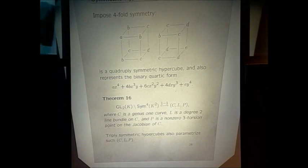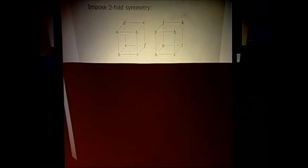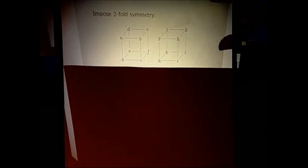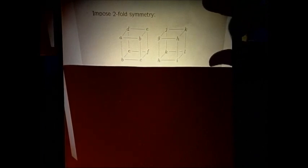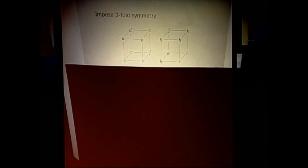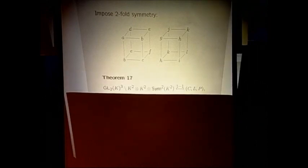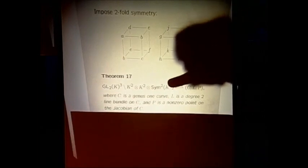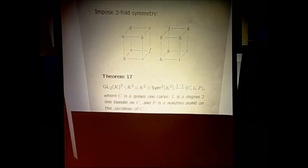One can also impose two-fold symmetry. If one imposes just two-fold symmetry — replacing K² ⊗ K² ⊗ K² ⊗ K² with K² ⊗ K² ⊗ Sym²K², i.e., two-by-two matrices of binary quadratic forms — then doubly symmetric hypercubes modulo the action of GL2 cubed parametrize a genus one curve, a degree two line bundle, and just a single point on the Jacobian instead of two points.